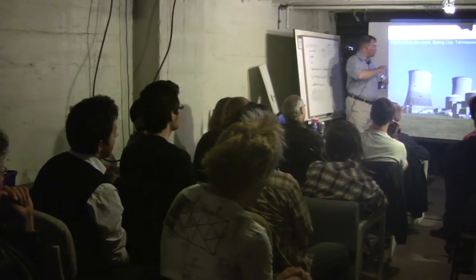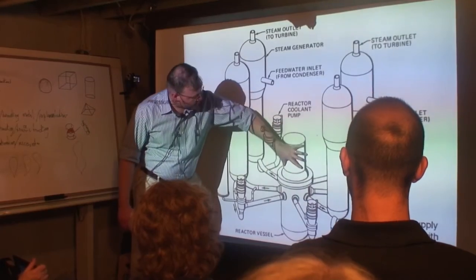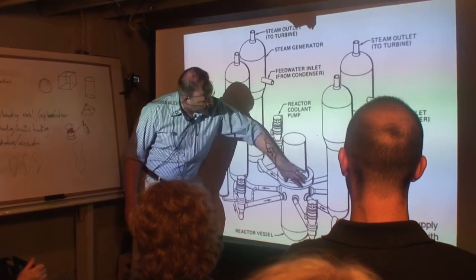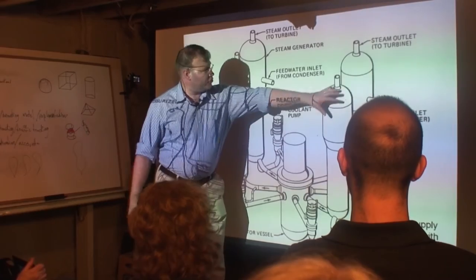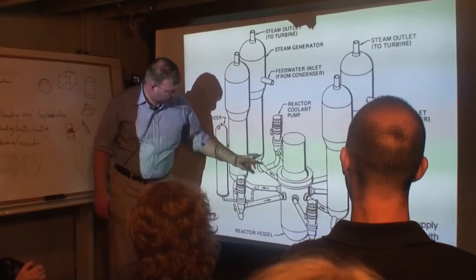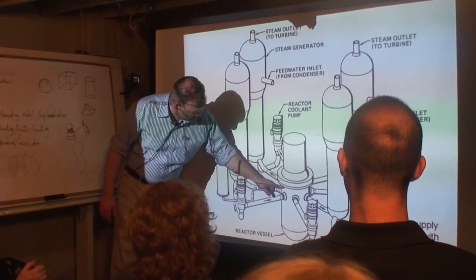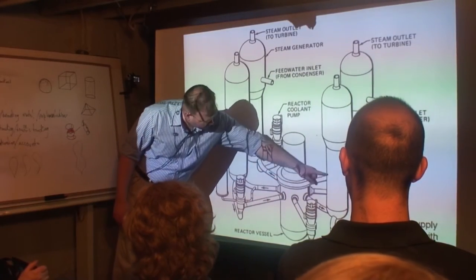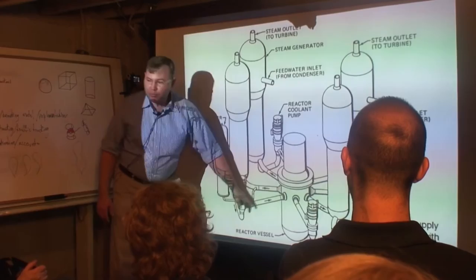This is the Watts Bar plant. Up here is where all the control rods slide in and out of the core. Then there's these four steam generators. The steam generators at Watts Bar are as big, if not bigger, than the reactors, and they also have to operate at very high pressures. There's four of them. Look at that: one, two, three, four, five, six, seven, eight big pipes.